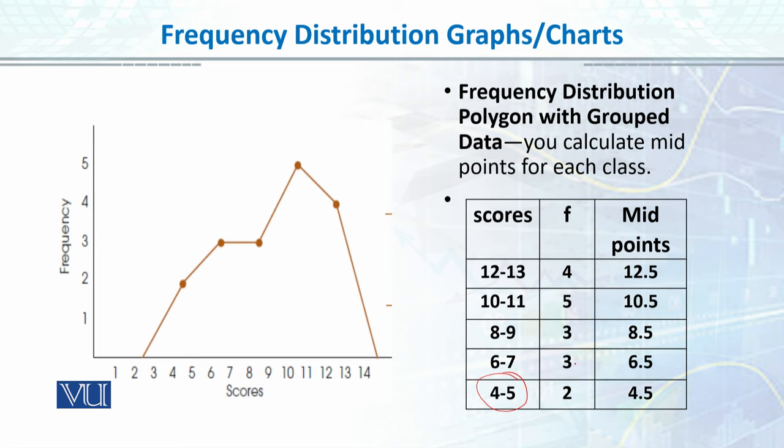Now I have this midpoint added to it. Midpoint for your 4 plus 5 divided by 2, which is 4.5. So you have lower and upper limit, and divide the midpoint. You will place the midpoints here, and then according to the frequency, you put dots and connect those dots.